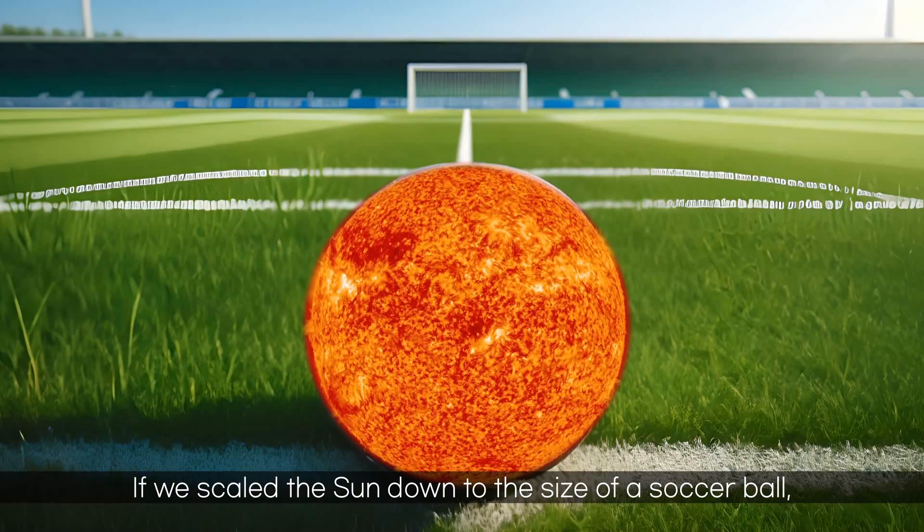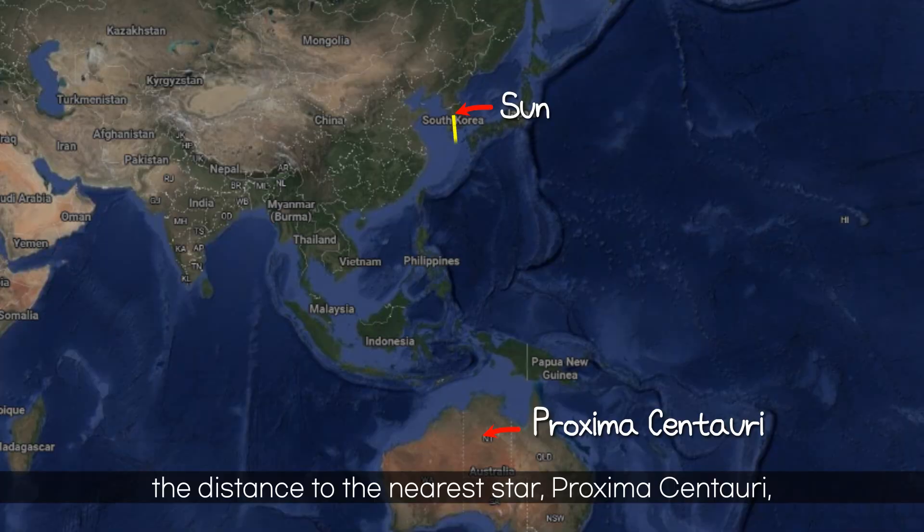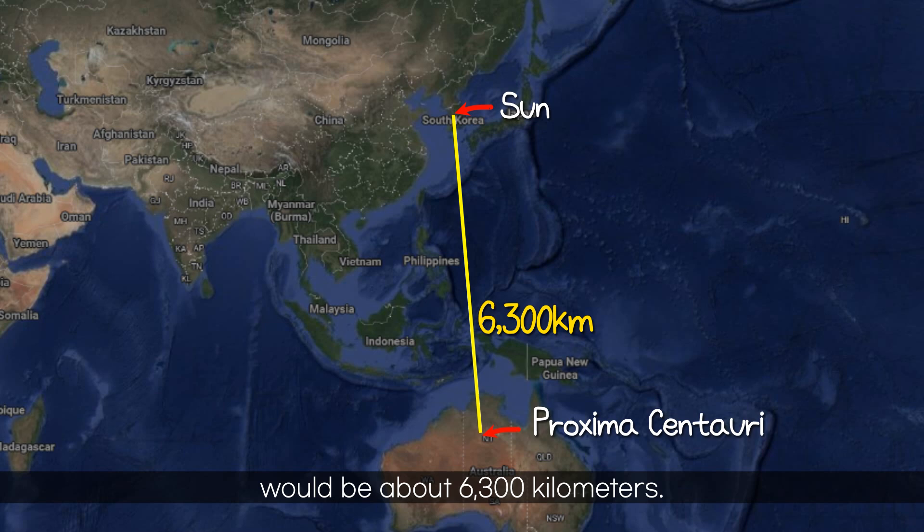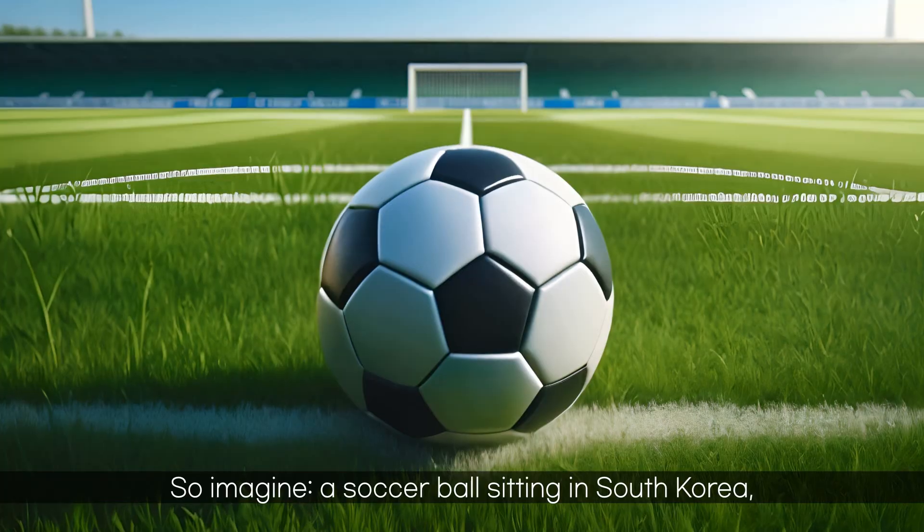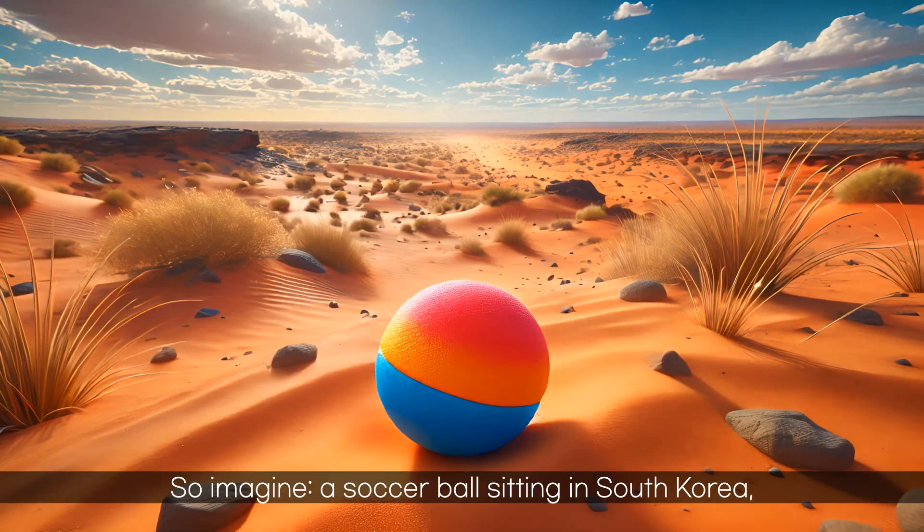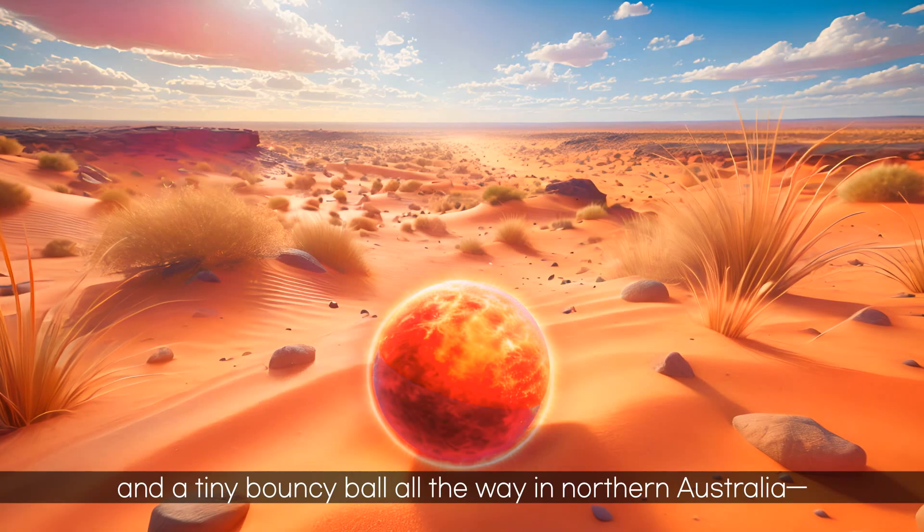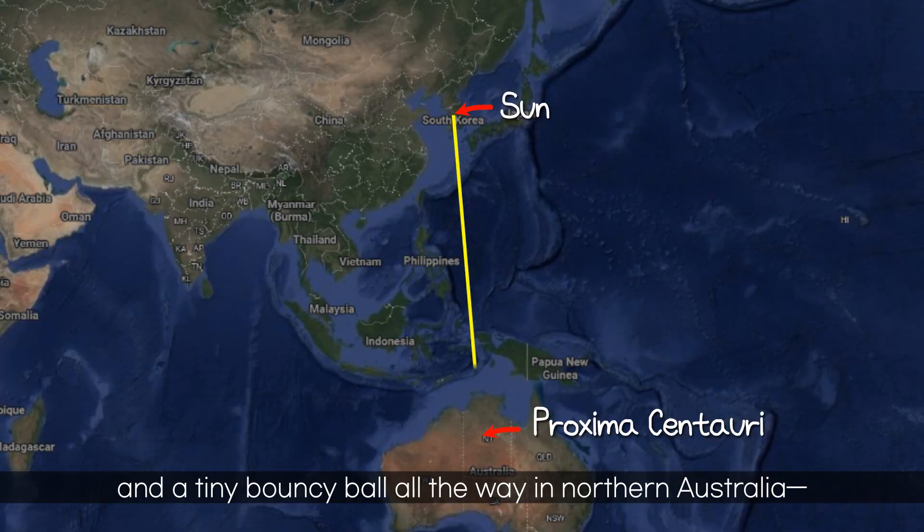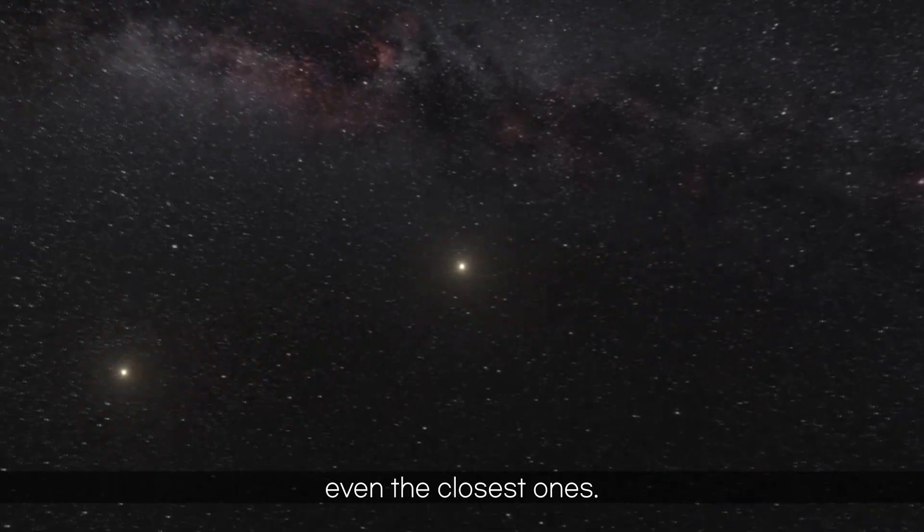So let's break it down with a simple comparison. If we scaled the sun down to the size of a soccer ball, the distance to the nearest star, Proxima Centauri, would be about 6,300 kilometers. That's roughly the distance from South Korea to Australia. Imagine a soccer ball sitting in South Korea and a tiny bouncy ball all the way in northern Australia. That's how far apart stars really are, even the closest ones.